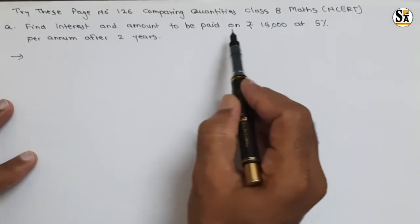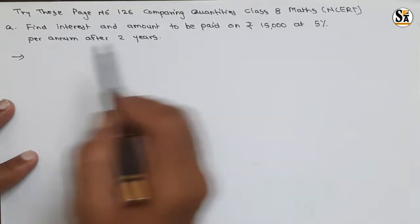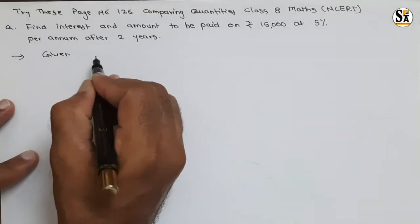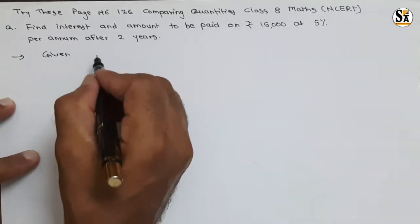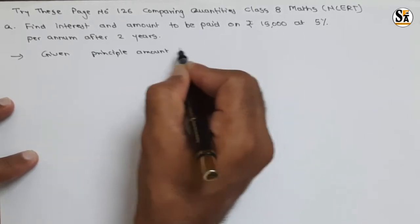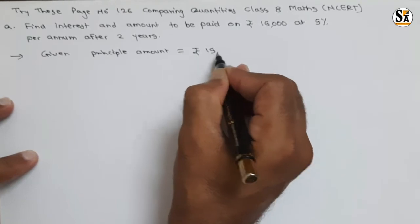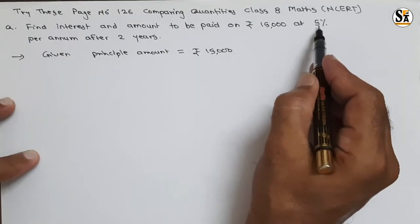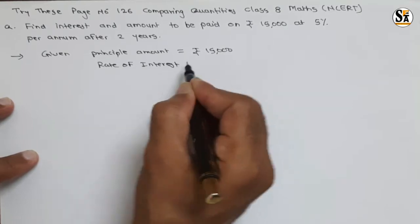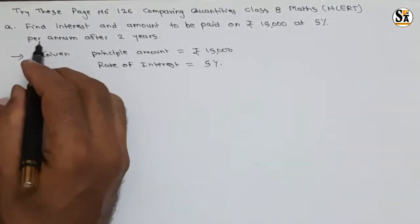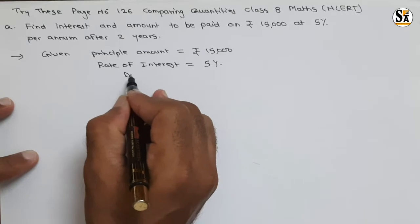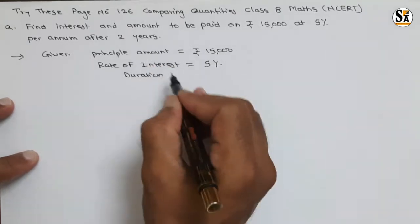The question is: find interest and amount to be paid on rupees 15,000 at five percent per annum after two years. See here what is given. Principal amount is equal to rupees 15,000. Rate of interest is equal to five percent. Duration is two years.